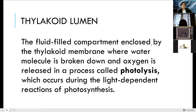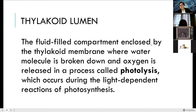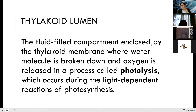The thylakoid lumen is the fluid-filled compartment enclosed by the thylakoid membrane, where water molecules are broken down and oxygen is released — this process is called photolysis. In the light-dependent reaction, electrons and ions are used to power the electron transport chain. As you consume these electrons and ions, you need to replenish them with ions found in water. Water splits, absorbing hydrogen ions and eliminating oxygen as a byproduct.